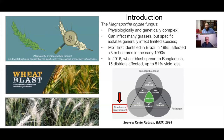Wheat blast became a very big concern for those of us working on wheat systems in South Asia in 2016 when it was found in Bangladesh — a very sudden infection that occurred in February 2016. It very rapidly affected 15 districts with recorded yield losses up to 51 percent. Since then we have not had a major outbreak, but we consistently observe that fungal spores are in the environment with regular small-scale infections in key areas.